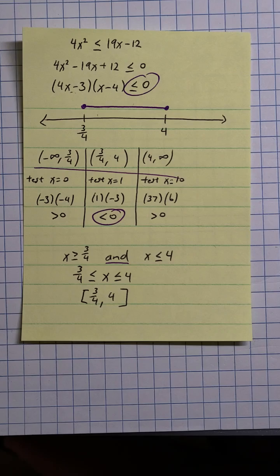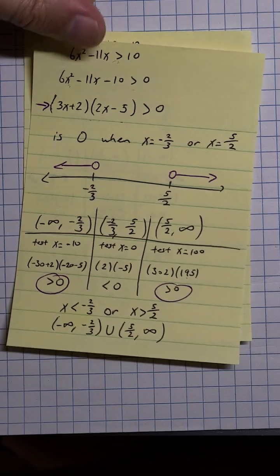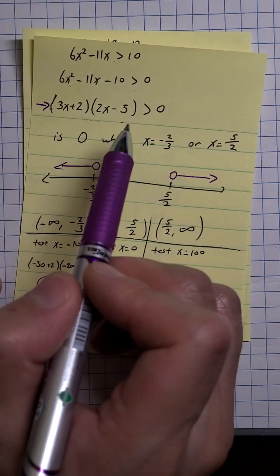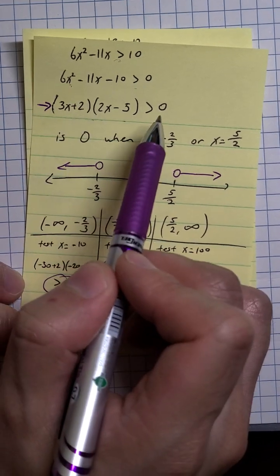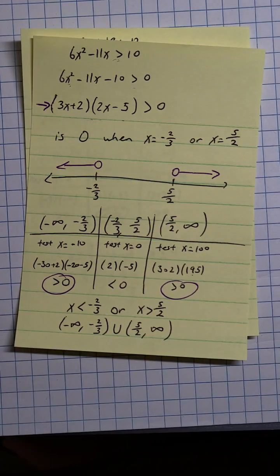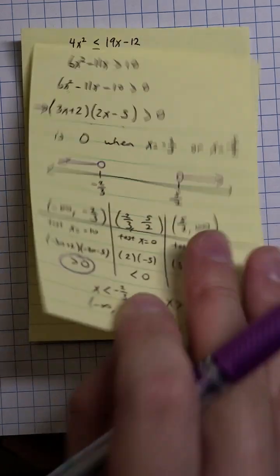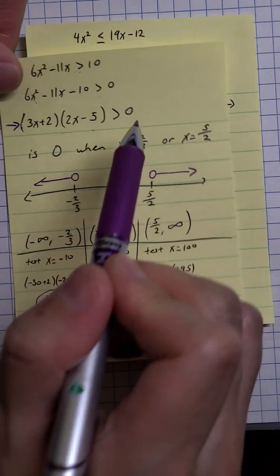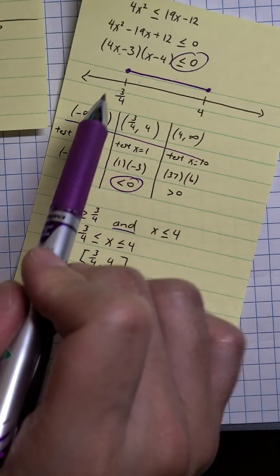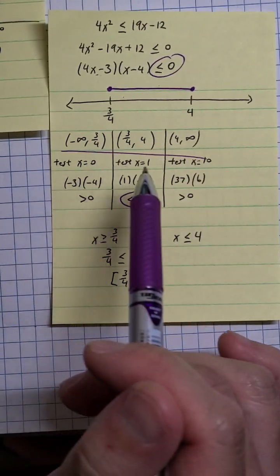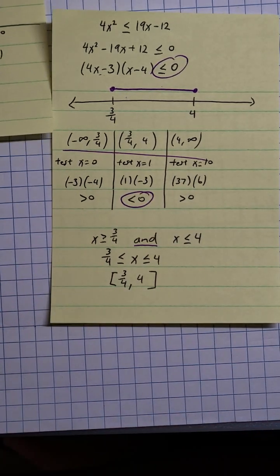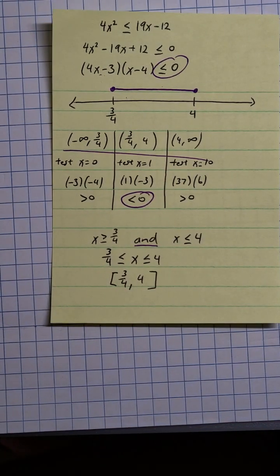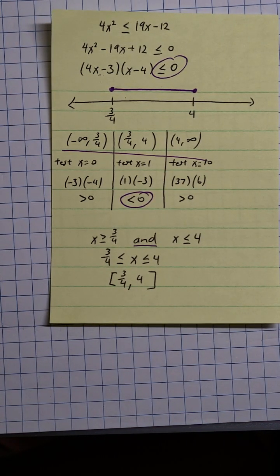That's it for this video. To recap: for quadratic inequalities, we compare with zero because we can't get an easy closed-form solution like we can for linear inequalities. We first find when the expression equals zero, then define intervals, then choose test points in each interval to determine the sign. Please like and subscribe if you found this helpful.